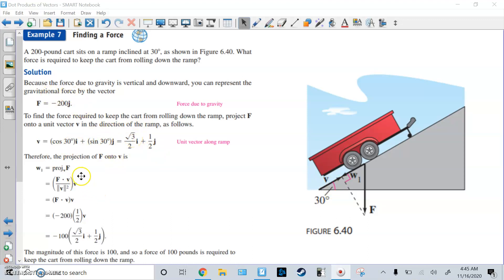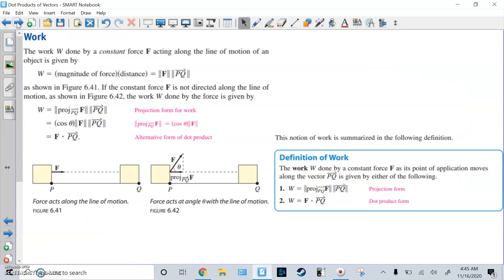Then we do the projection. You use the formula. You multiply it out. Remember the I component for F is 0, so that makes this pretty simple. So this is negative 200 times 1 half times V. Fill it out. You get this. So now we know that the magnitude of this force is 100. So 100 pounds is to keep this from rolling backwards down this hill or down this ramp.